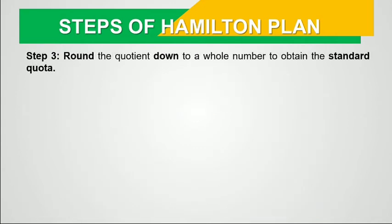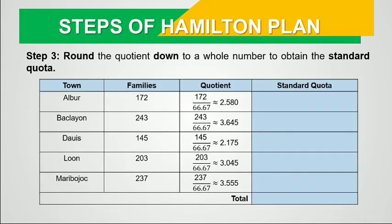The next step is to round the quotient down to a whole number to obtain the standard quota — we simply disregard the fractional part and copy the whole number. In Albor, the quotient is approximately 2.58, so the standard quota is 2. In Baclayon, 3.645 gives a standard quota of 3. In Daoist, 2. In Luon, 3. And in Maribohok, 3. The sum of the standard quotas is 2 + 3 + 2 + 3 + 3 = 13.